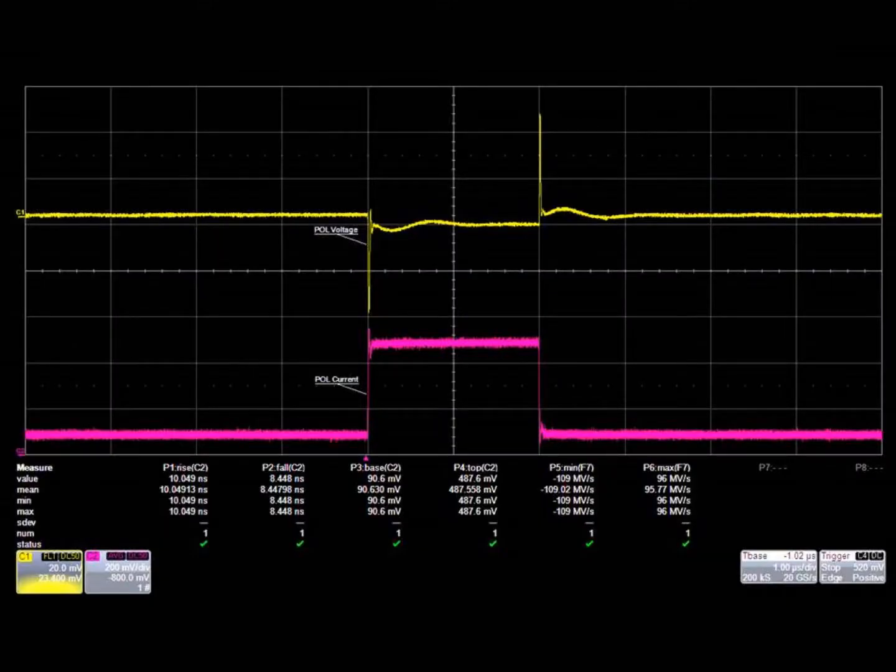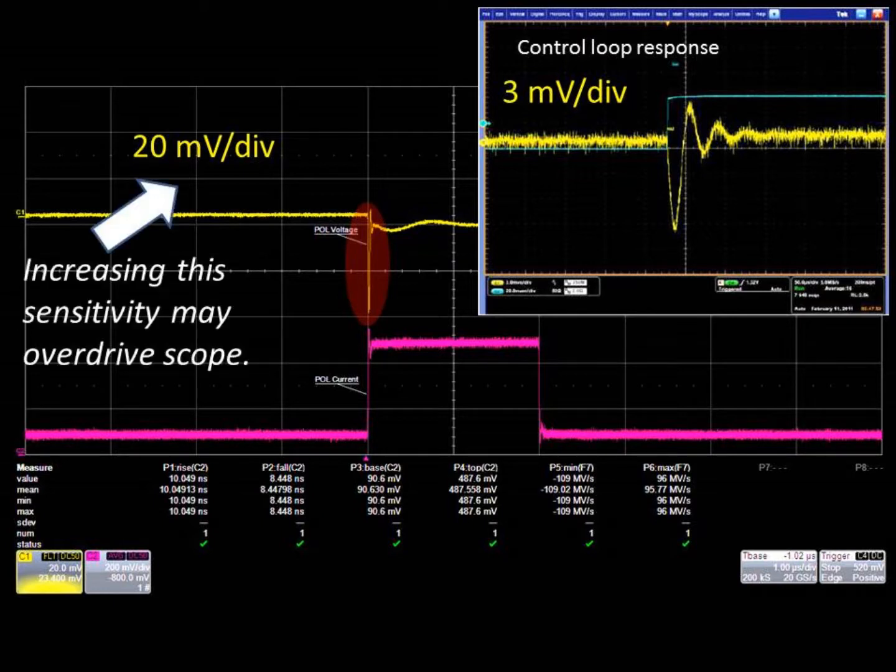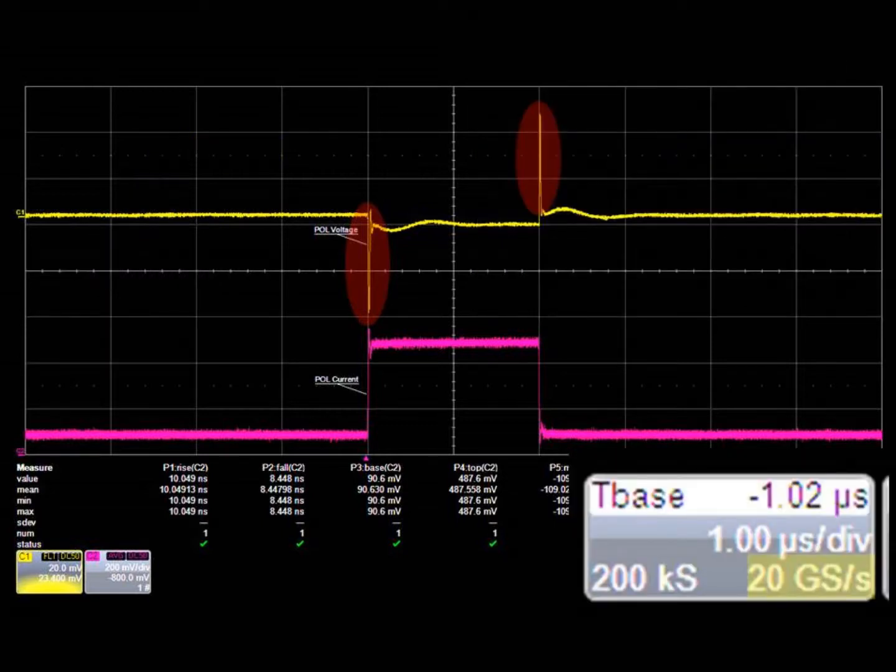Using an even faster scope in this measurement, we can clearly see the LDI-DT spikes. But notice that now we can't really see the control loop response due to the linear amplitude scale. Increasing sensitivity so that we can see the spike might overrange the ADC. We need very high sample rate and very high bandwidth, which we have, and yet now we still can't see the whole picture.